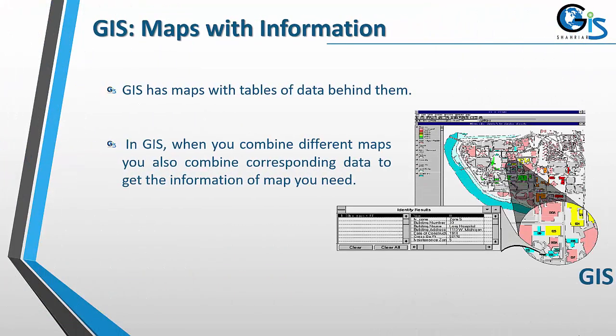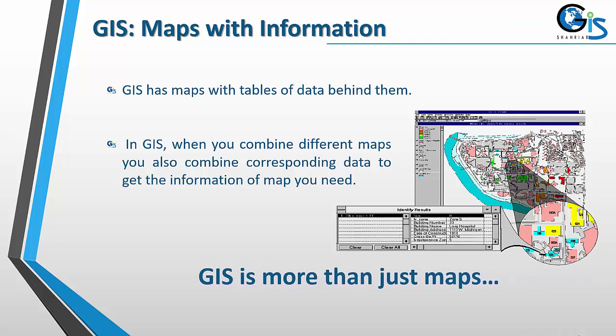GIS maps with information. GIS has maps with tables of data behind them. In GIS, when you combine different maps, you also combine corresponding data to get the information of the map you need. So GIS is more than just maps.